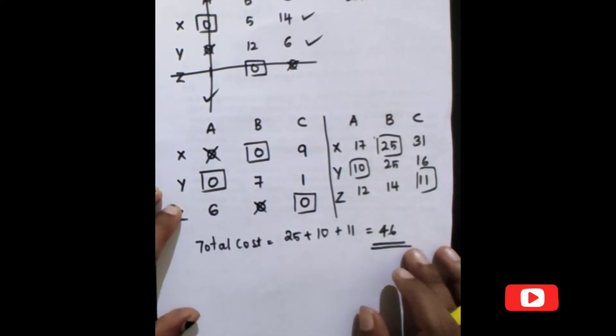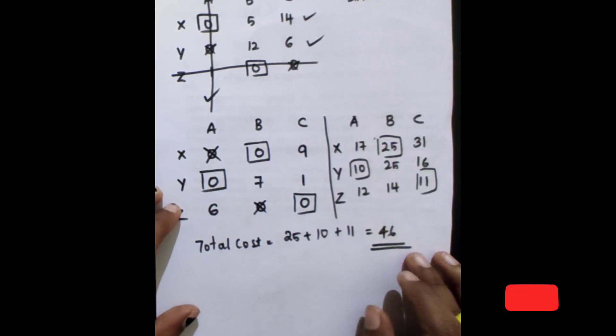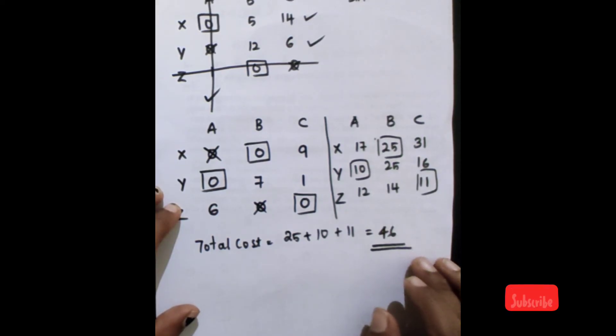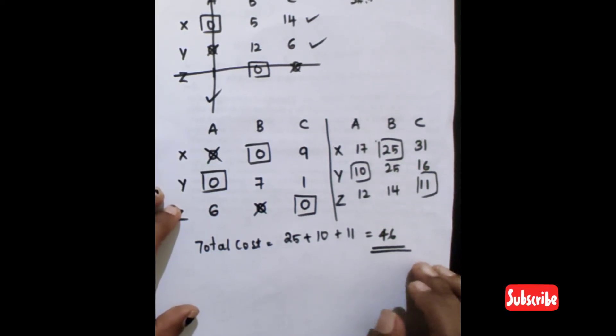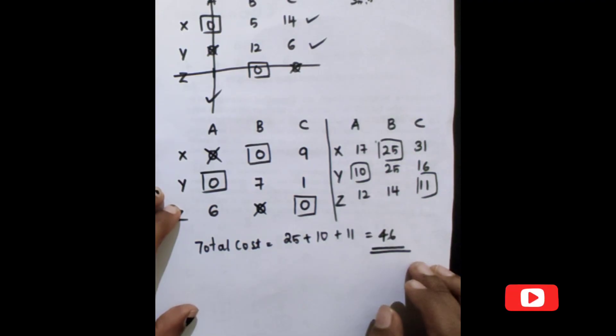So here we have solved the Type 3 assignment problem using the Hungarian method. Hope this is very clear for you. Thank you for watching — don't forget to like, share, and subscribe to our channel.